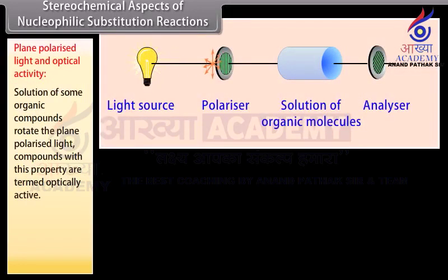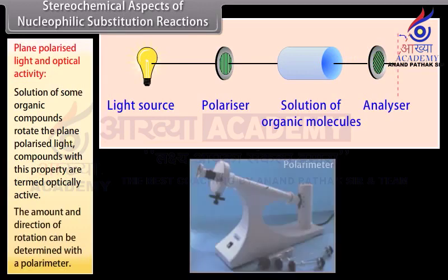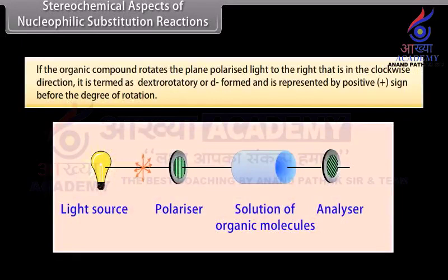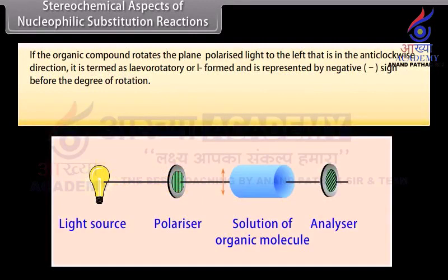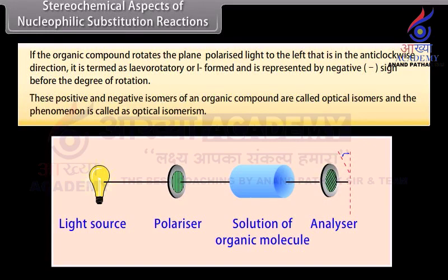Stereochemical aspects of nucleophilic substitution reactions — plane polarized light and optical activity: solutions of some organic compounds rotate plane polarized light. Compounds with this property are termed optically active. The amount and direction of rotation can be determined with a polarimeter. If the organic compound rotates plane polarized light to the right, that is, in the clockwise direction, it is termed dextrorotatory and is represented by a positive sign before the degree of rotation. These positive and negative isomers of an organic compound are called optical isomers and the phenomenon is called optical isomerism.